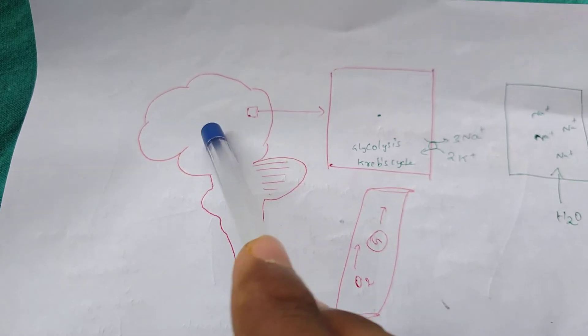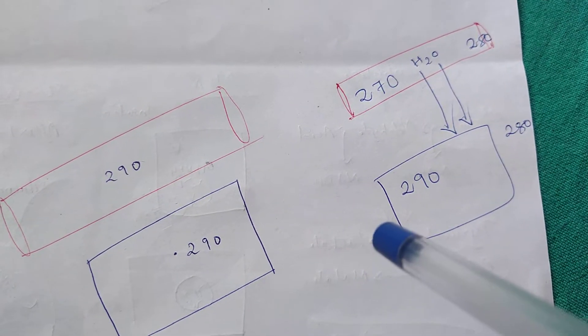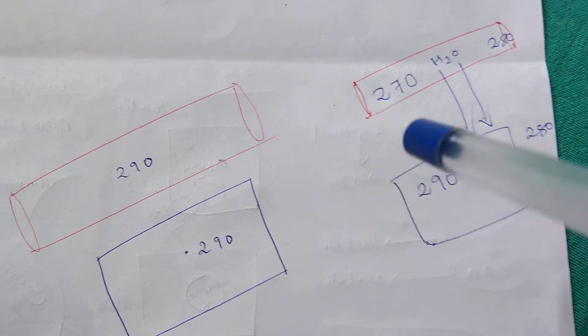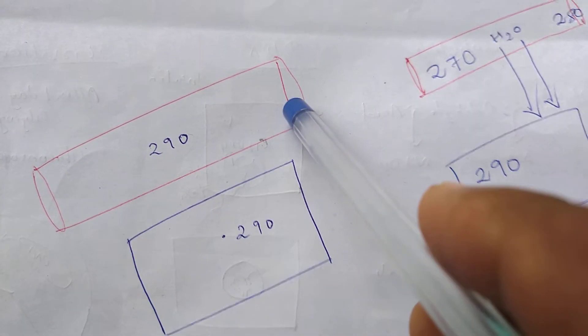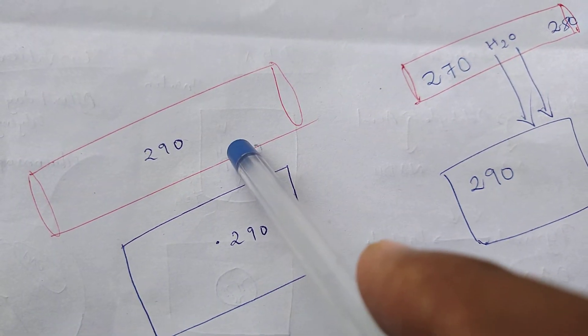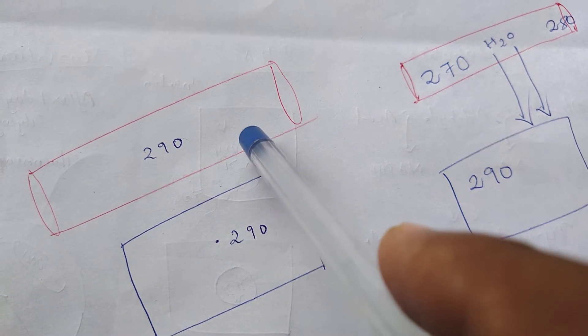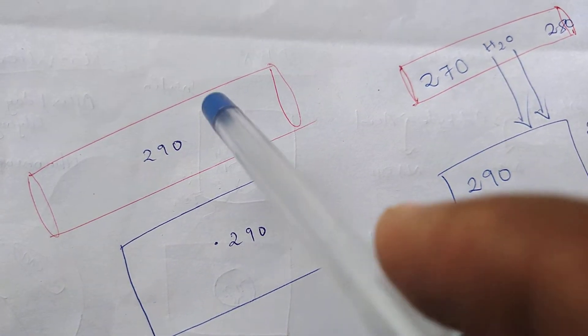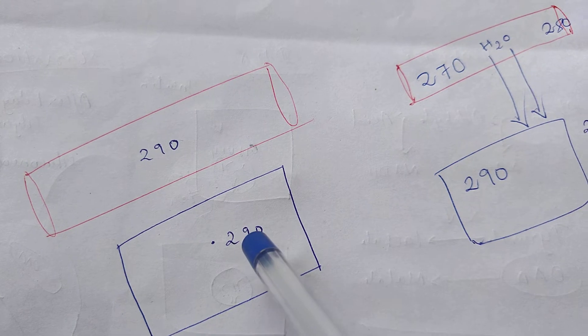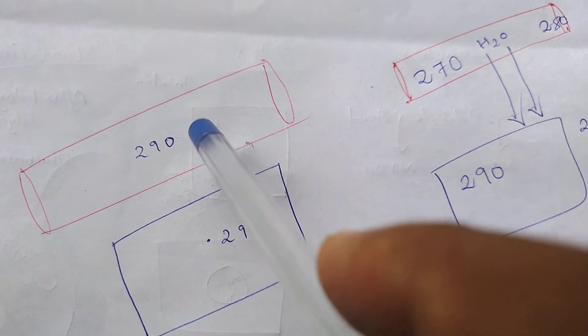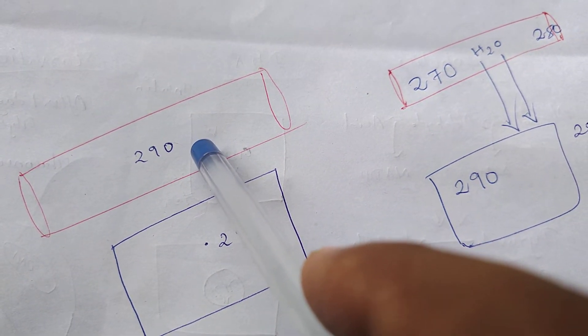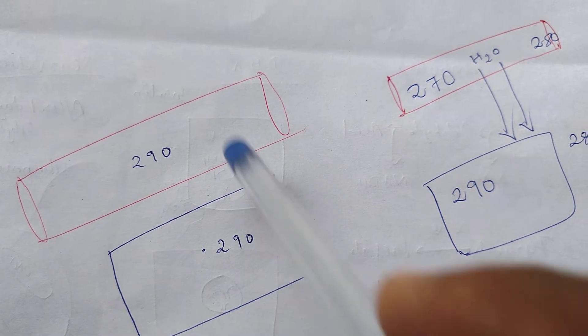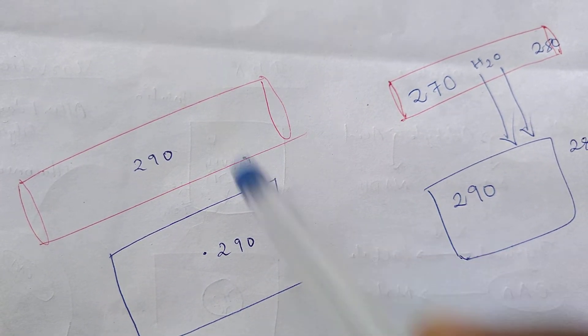Cerebral edema happens in head injury, and we also should avoid dextrose-containing fluids in head injury. That is because normally the serum osmolality is 285 to 295. I am taking it as 290 here, and the same is being maintained in the cells too. This serum osmolality is maintained to avoid fluid shifts between these two compartments.